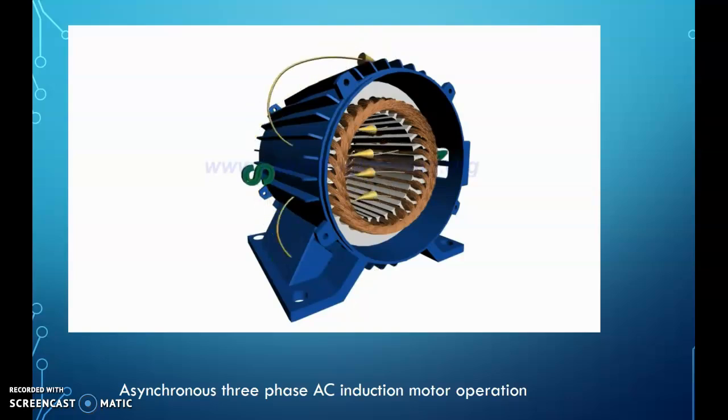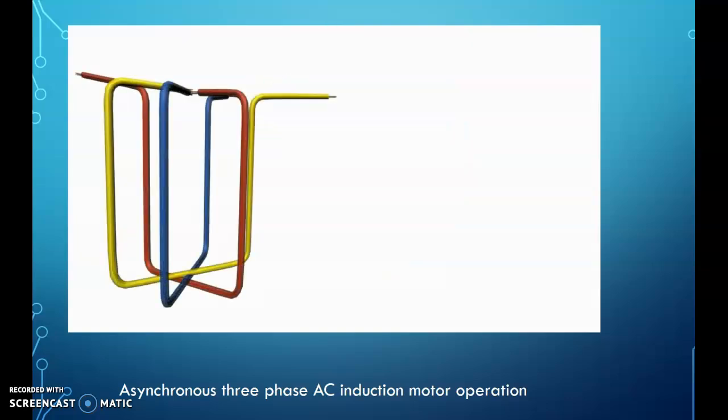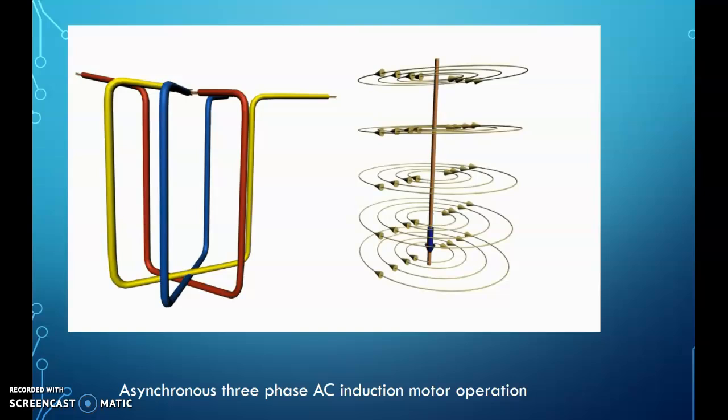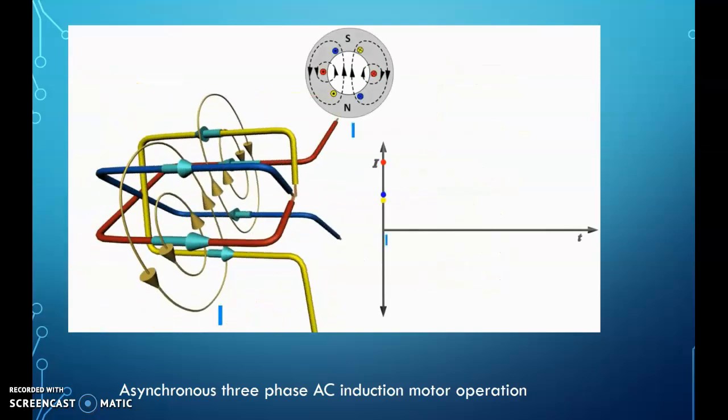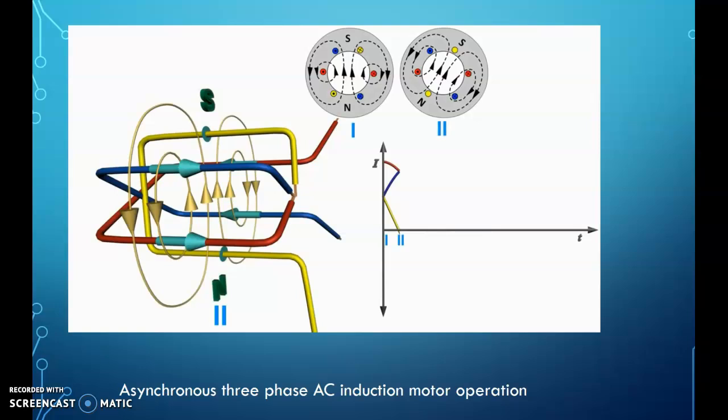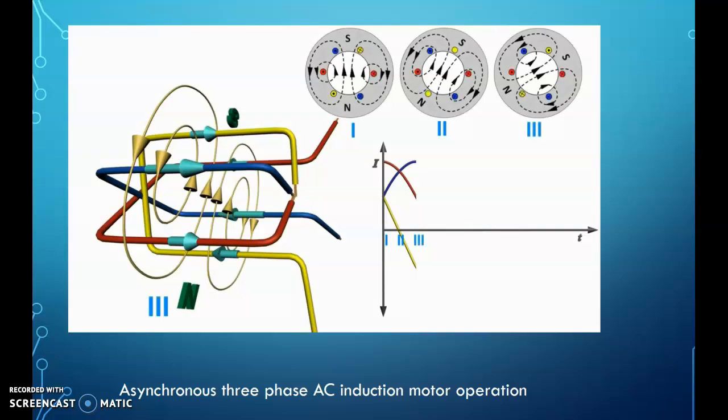To understand this phenomenon much better, consider a simplified three-phase winding with just three coils. A wire carrying current produces magnetic field around it. Now, for this special arrangement, magnetic field produced by three-phase AC current will be as shown at a particular instance. With variation in AC current, magnetic field takes a different orientation as shown. From these three positions, it's clear that it's like a magnetic field of uniform strength rotating.